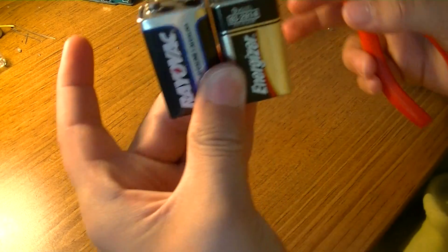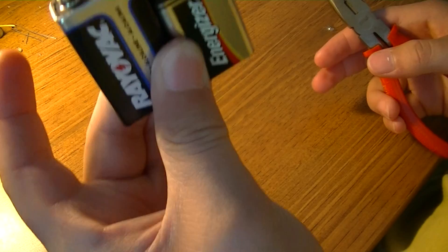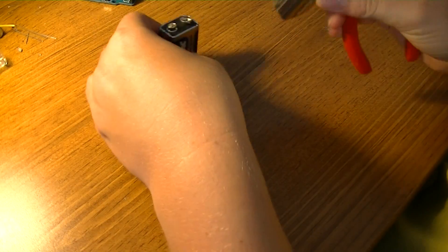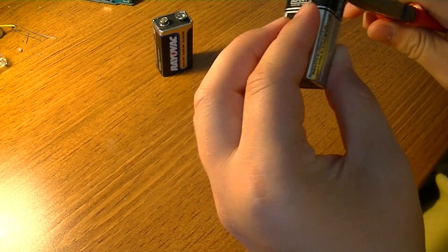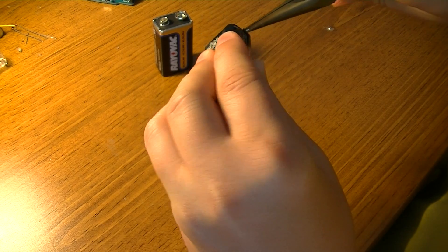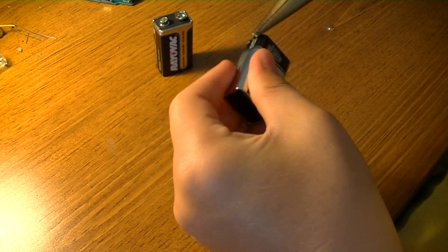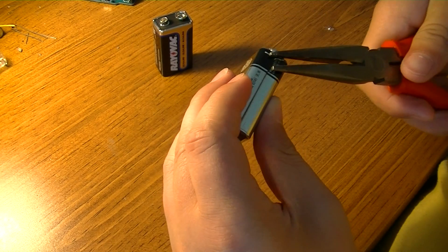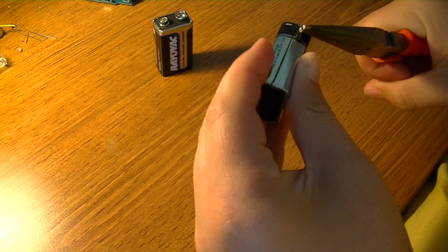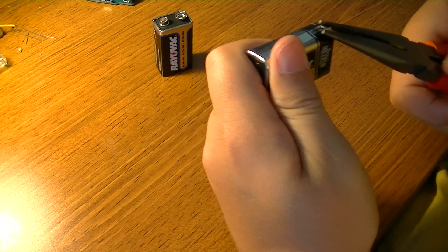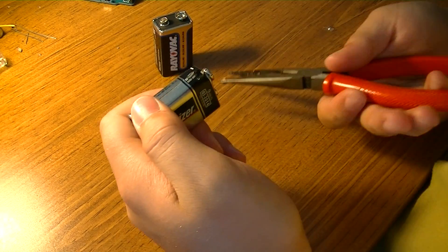We're going to open two different batteries, and we're going to find two completely different things inside. Let's start with the Energizer. Just take a needle nose plier, you probably already know how to open them, but it's pretty easy to do. And of course, one of the most useful things that you get out of here as an electronics person is the 9-volt battery top here.